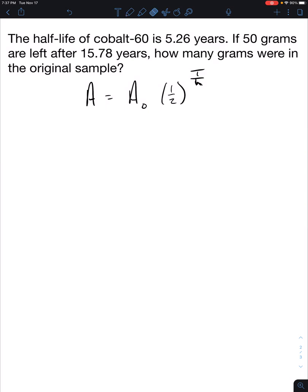Right now that kind of looks like t over t. Let me make that cleaner. t over h. So remember, a is our final amount. a sub 0, this is what we're solving for. This is the original amount. I think I spelled original wrong, but that's okay. t is the total time, and h is the half-life.